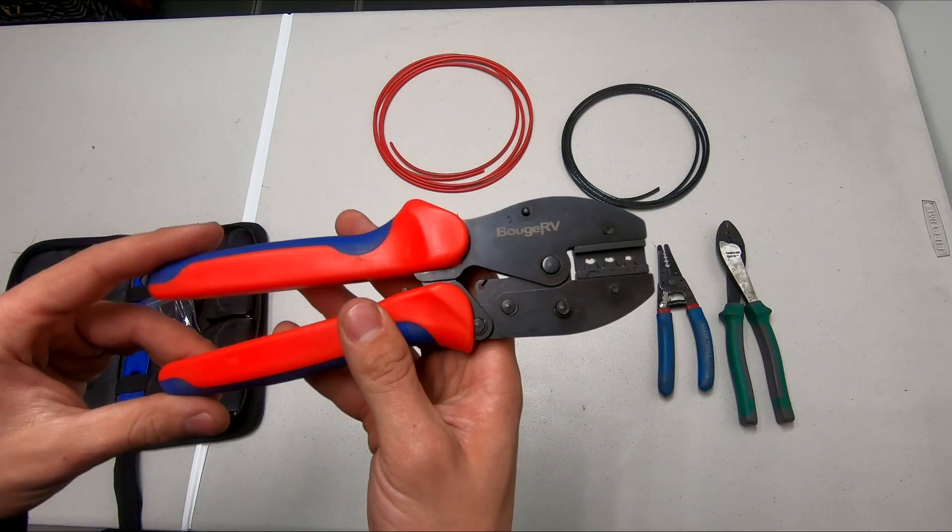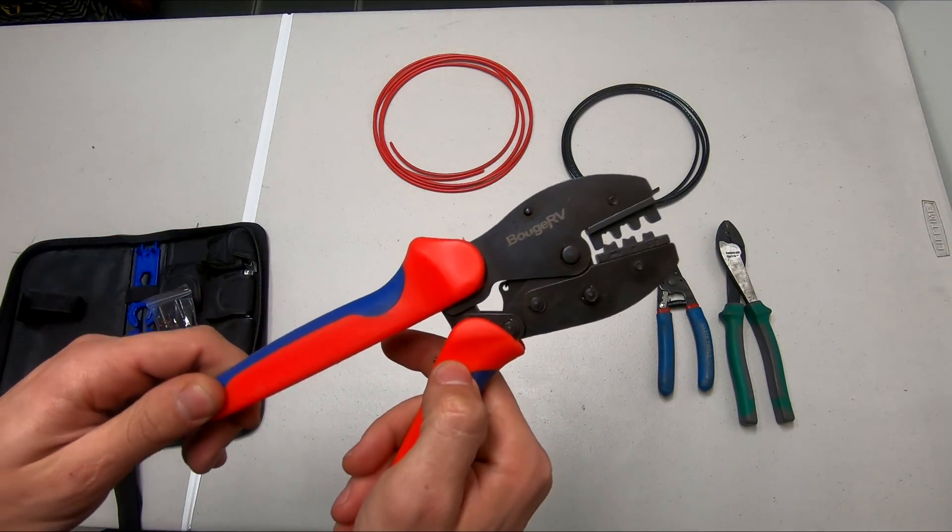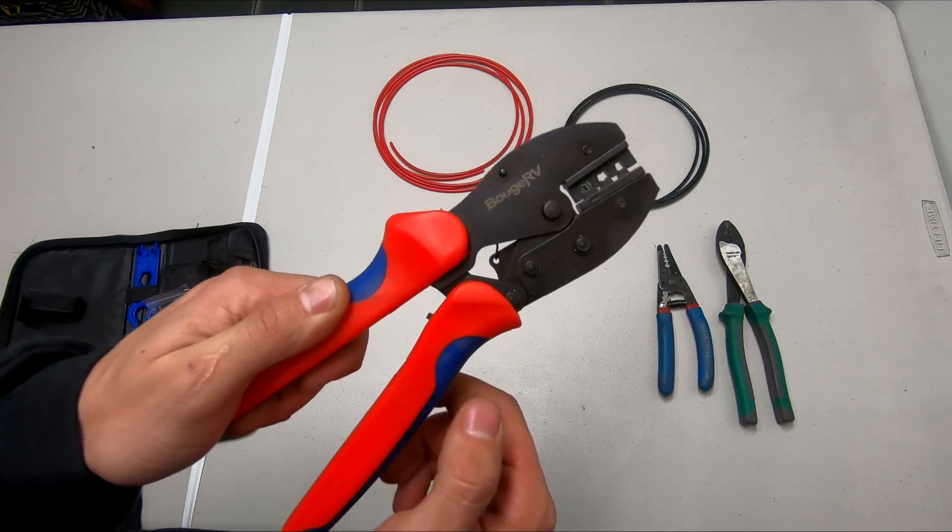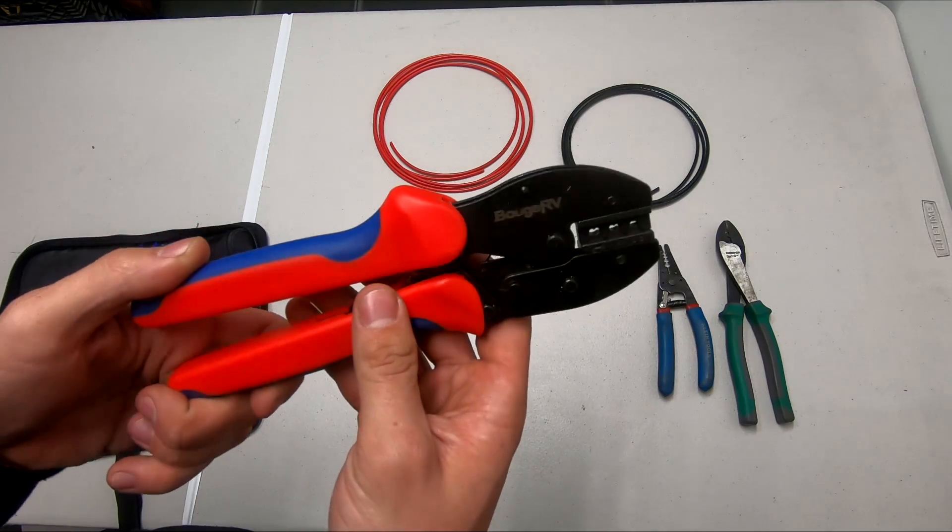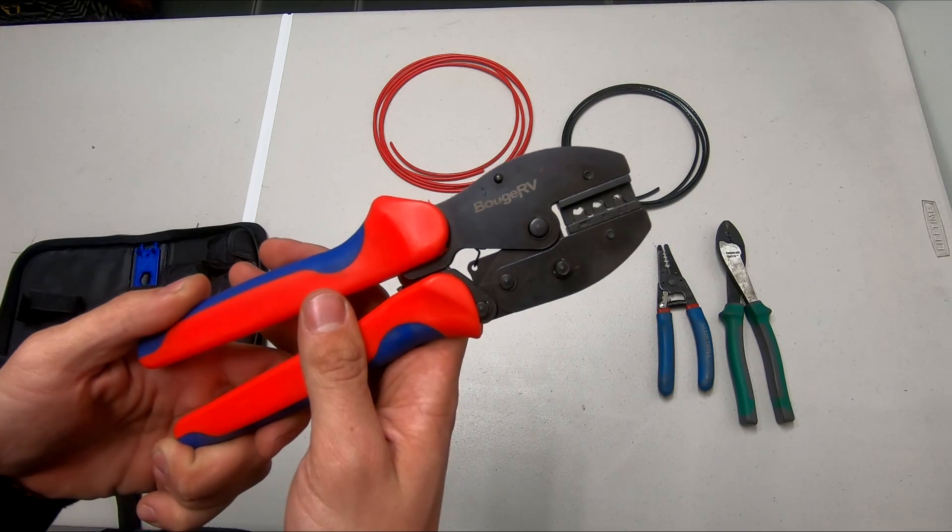As you can see, this is the crimping tool. I'm going to squeeze this and you'll notice it's a ratcheting type. If you only squeeze it a little bit, it holds that position. This will make sure you get a full crimp on that connector before it releases, so it's not too loose and causes a bad connection.